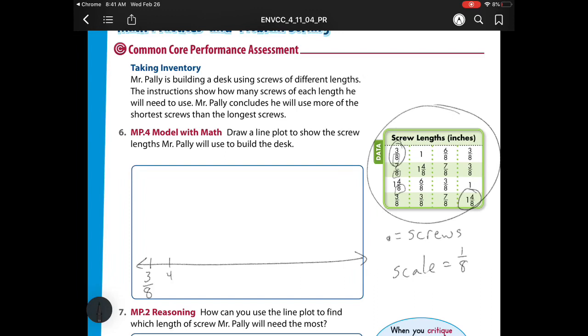So I'm going to count by eighths. So I have 3 eighths, 4 eighths, 5 eighths, 6 eighths, 7 eighths, 8 eighths, which is the same as 1 whole. Then I have 1 whole and 1 eighth, 1 whole and 2 eighths, 1 whole and 3 eighths, and my last one is 1 whole and 4 eighths.